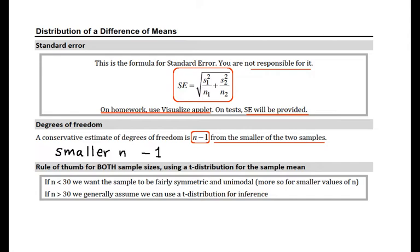Following again on our ideas from one mean, we have sample size conditions for using the t-distribution. This is the same rule of thumb that we established for one mean, and now it has to hold for both values of n. This must hold for both n1 and n2. So if either of those sample sizes is smaller than 30, then we want to look at the shape of that distribution.